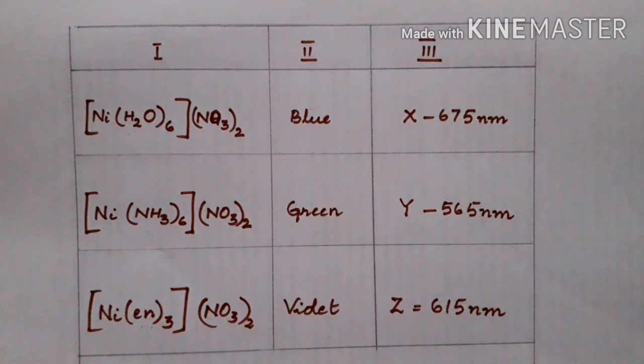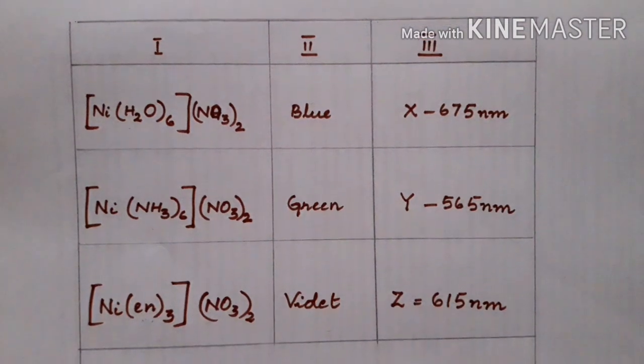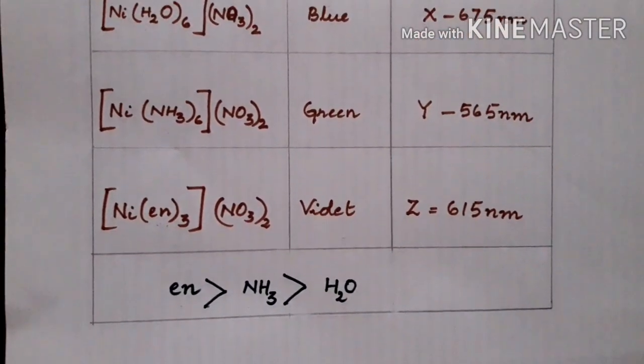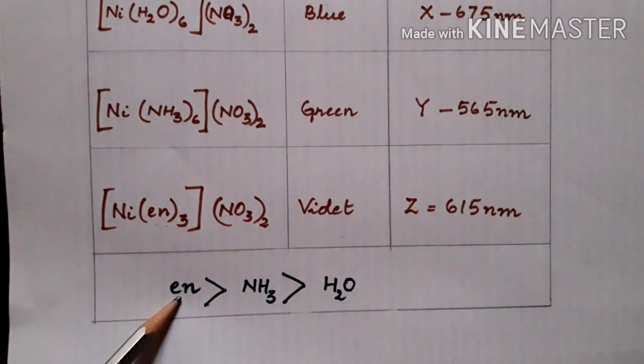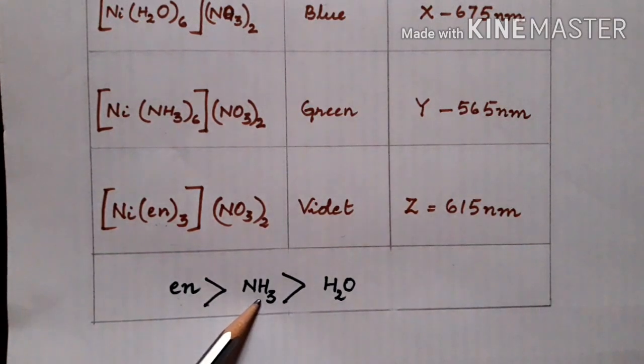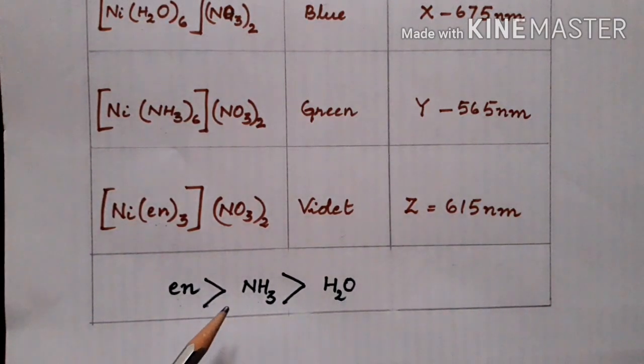When we check the spectrochemical series, one is able to find out that out of these different ligands, ethylenediamine is the strongest followed by ammonia and water. We have learned that stronger the ligand, more will be the CFSE, that is the crystal field splitting energy. When energy is more, you find the wavelength will be lesser. Depending on that, you have to solve the problem. Thank you.